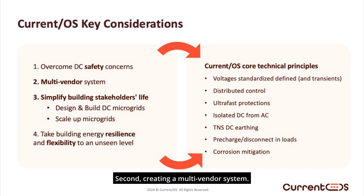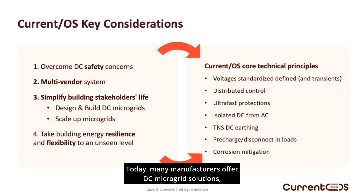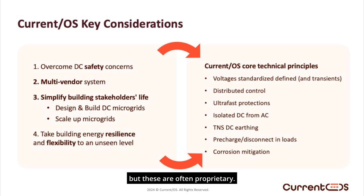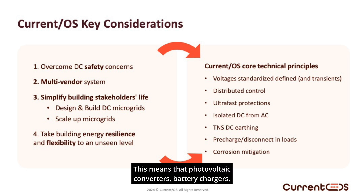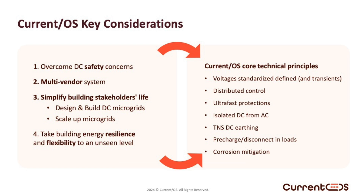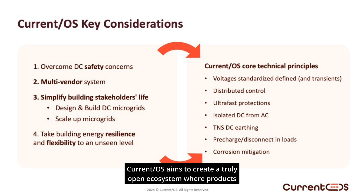Demonstrating that today's technology has resolved DC safety concerns is crucial for its widespread acceptance. Second, creating a multi-vendor system. Today, many manufacturers offer DC microgrid solutions, but these are often proprietary. This means that photovoltaic converters, battery chargers, and AC-DC converters from different brands cannot interoperate. Current OS aims to create a truly open ecosystem where products from different brands can work seamlessly together.